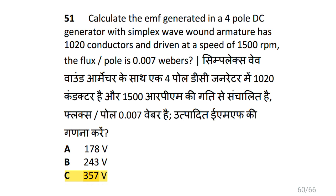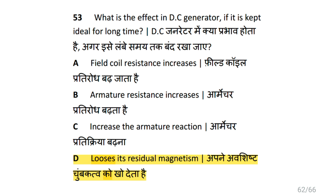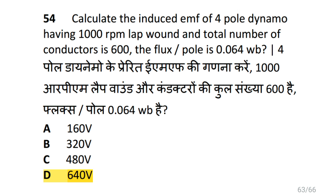By calculating, EMF generated equals ΦZNS divided by 60 multiplied by P by A, giving 357 Volts. How can the effect of armature reaction be neutralized in a large DC generator? By using compensating winding. What is the effect on a DC generator if it is kept idle for a long time? That is it loses its residual magnetism. Calculate the induced EMF of a 4-pole dynamo running at 1000 RPM, lap wound, with 600 total conductors and flux per pole of 0.064 Weber. Using the same formula, we get 640 Volts.